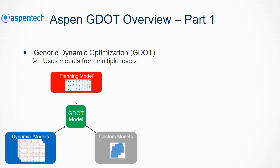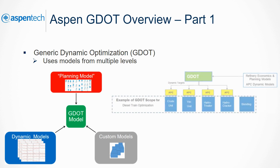GDOT can also incorporate any custom models used in the scope of the GDOT module. A diagram showing an example implementation of GDOT is shown. In this diagram, GDOT is considering refinery economics and planning models alongside the APC dynamic models. It uses this data to send dynamic targets to the APC controllers on the various units and coordinates their operation.